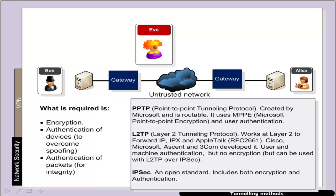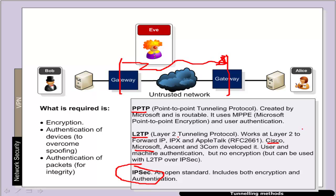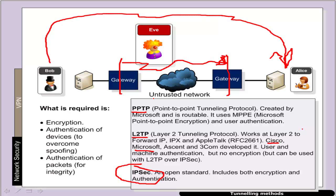Typical methods include point-to-point tunnelling, where we encrypt data and tunnel it through the network so no one can interpret it. The Layer 2 Tunnelling Protocol is another option, though it tends to be proprietary. One of the best methods is IPsec, which is an open standard for both encryption and authentication. More and more users are now connecting to remote networks using IPsec connections for their VPN.